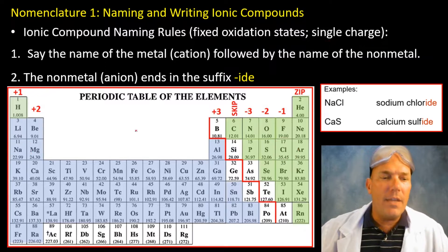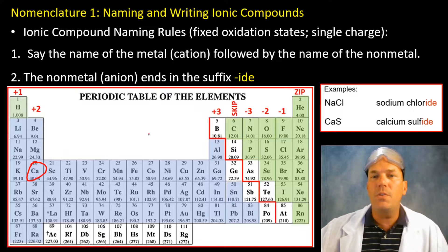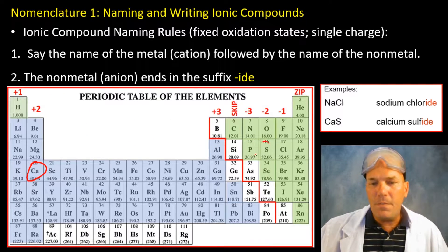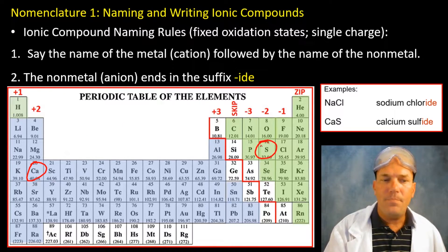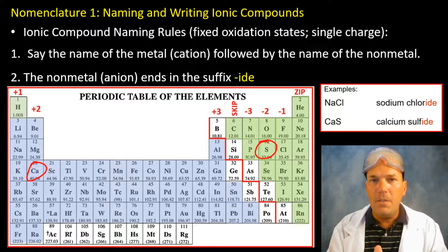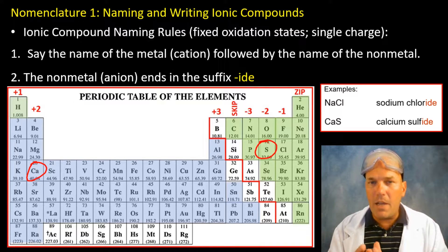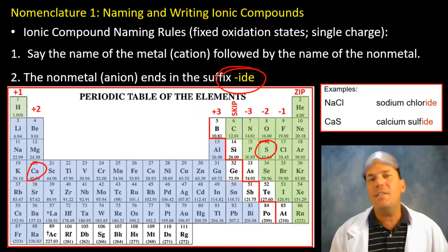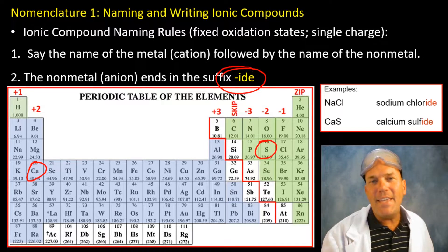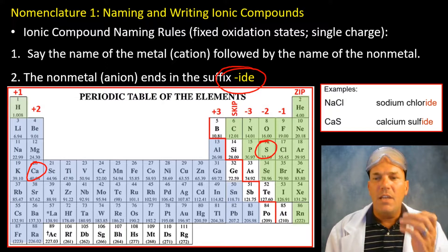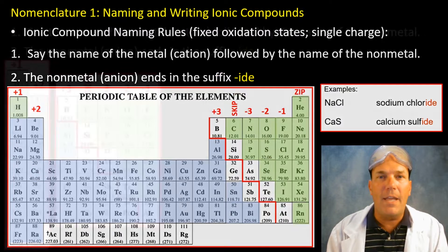Let's look at calcium, which is a group two alkaline earth metal, combined with sulfur. Calcium sulfide. Sulfur is the element circled on the right of the stairs, but we use the suffix "-ide" to indicate it's an anion: calcium sulfide.